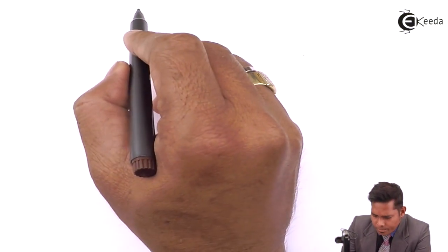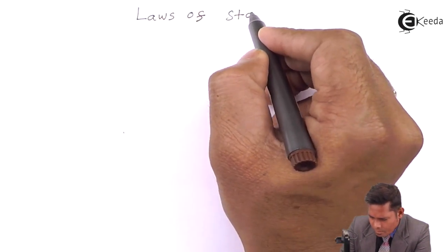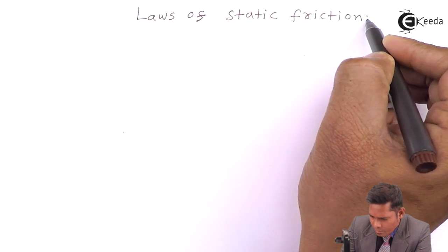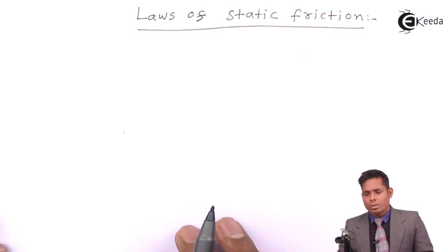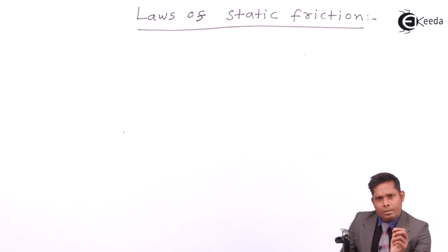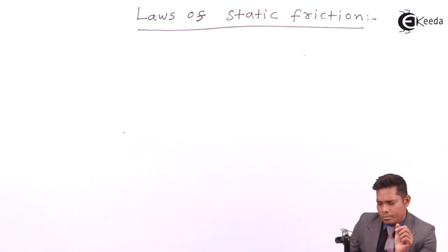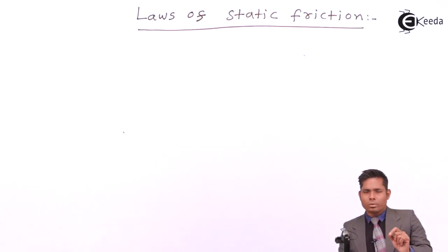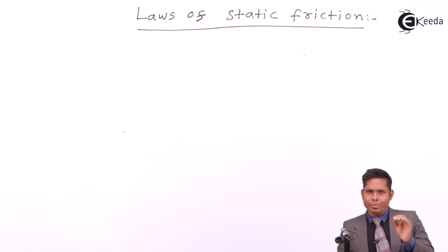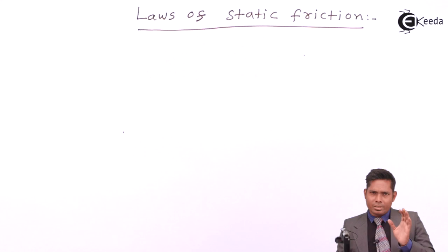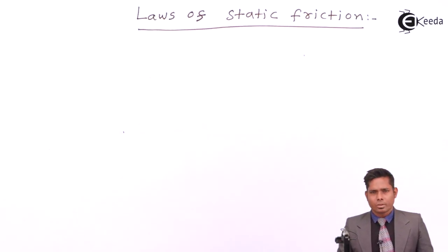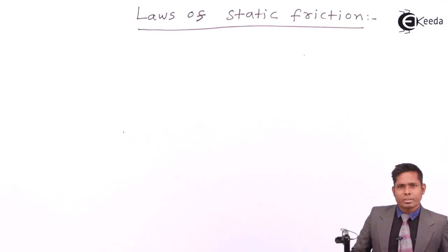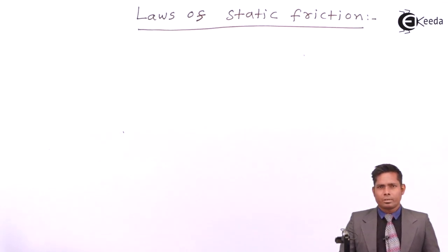Now, laws of static friction. There are basically three laws in friction, whether it is static or dynamic or kinetic. The first law is that the limiting force of friction — that means there is a maximum value of static friction — is directly proportional to the normal reaction. This is the first law.